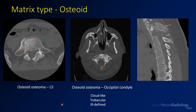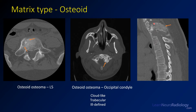The two types of bone matrix are osteoid and chondroid. Osteoid is typically described as cloud-like, trabecular, or ill-defined. Here are examples: an osteoid osteoma with dense bone surrounding a lytic area, and an osteoid osteoma of the occipital condyle showing new bone that looks like the adjacent normal bone. In our case, the bone looks very similar to the bone in the center of the vertebral bodies, which is typically described as osteoid matrix.